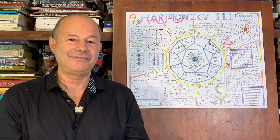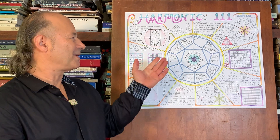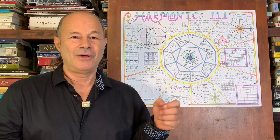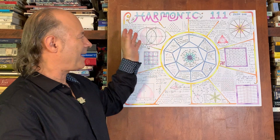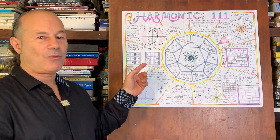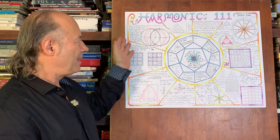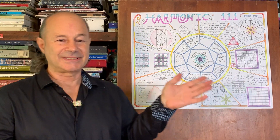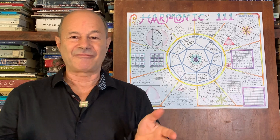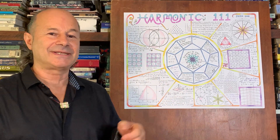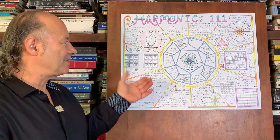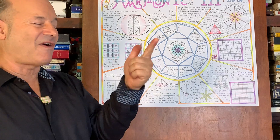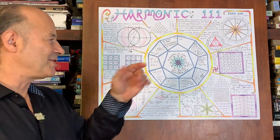Welcome everybody, my name is Jane 108. This is part two of a two-part series. We just discussed part one which was all about Uni Phi — about how the number 111, harmonic 111, permeates all of the living mathematics of nature. This section is going to be on other references that I've collected over the last 40 years of research. I like to call this Uni Phi because Uni is 1 and Phi is also the golden ratio.